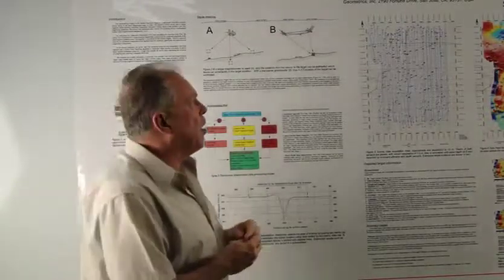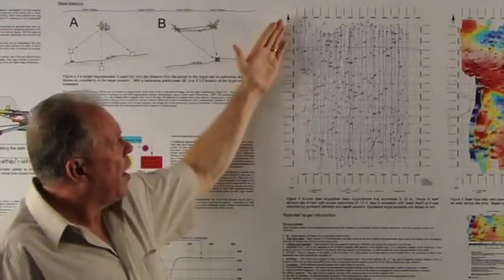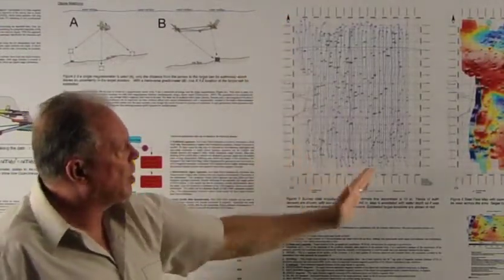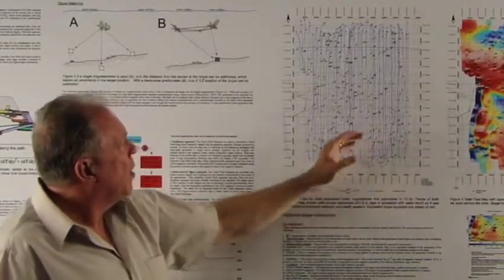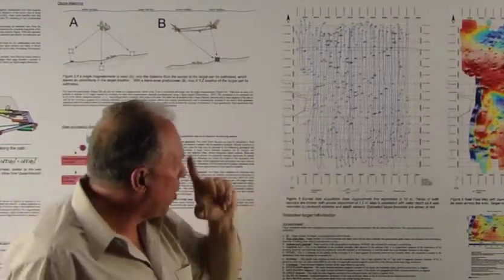I'm going to start by talking about the actual data acquisition. We can see here that this is a section of Pearl Harbor, approximately two kilometers by one kilometer.